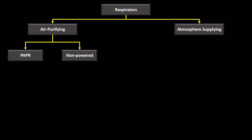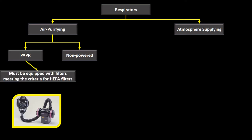Powered air purifying respirators must be equipped with a filter that meets HEPA filter criteria, and when they do, they will also be magenta or purple. A powered APR has a power source — like a battery-operated fan — that pushes air through the filter. It still pulls air from the atmosphere and requires at least 19.5% oxygen in the environment.